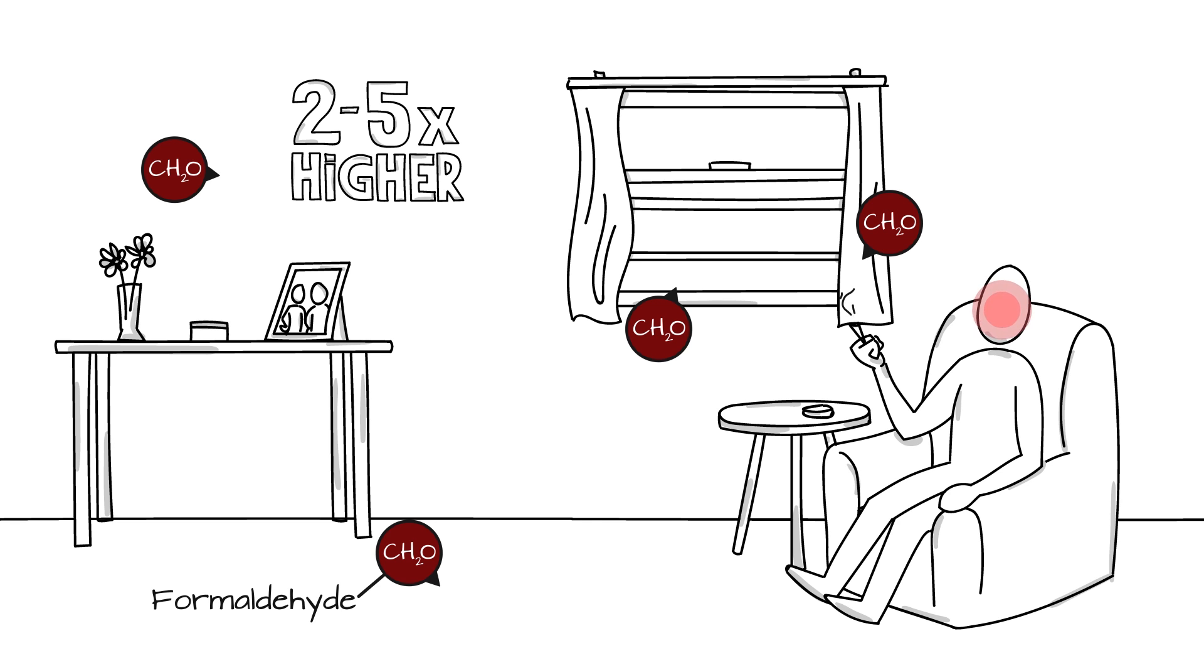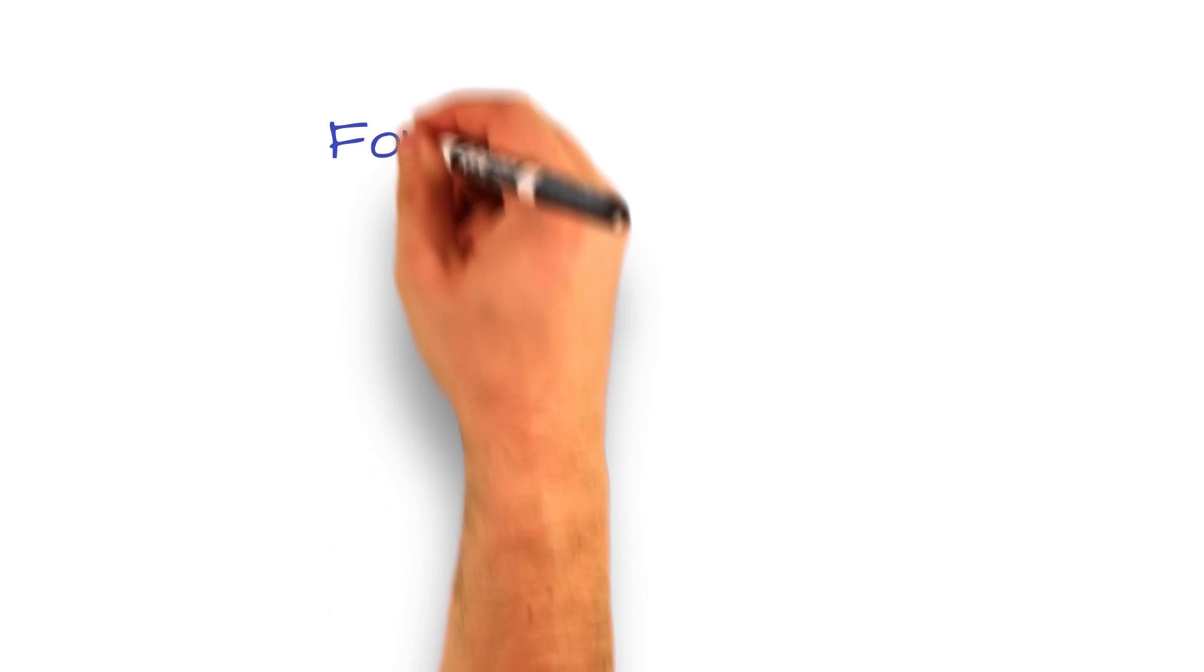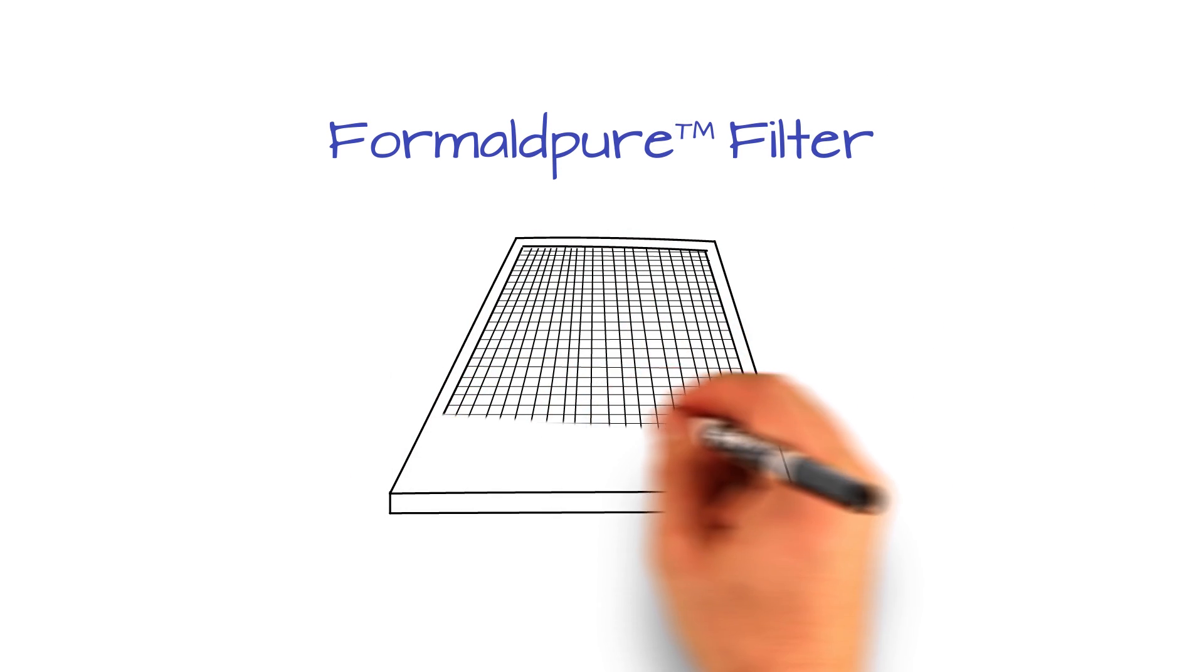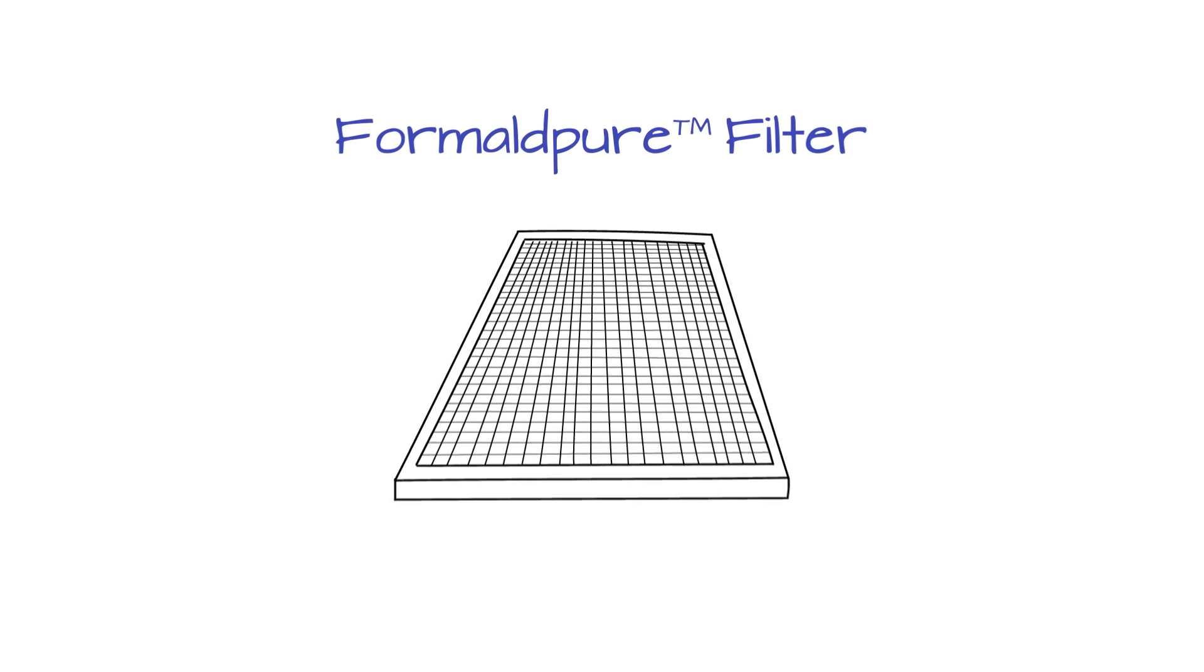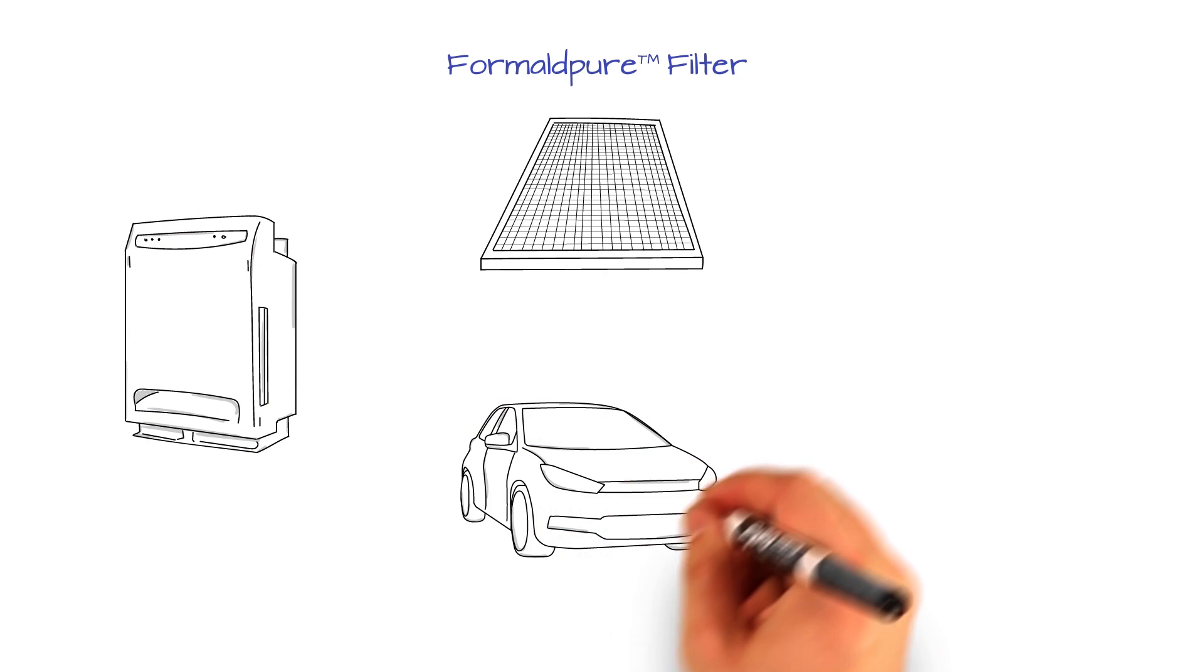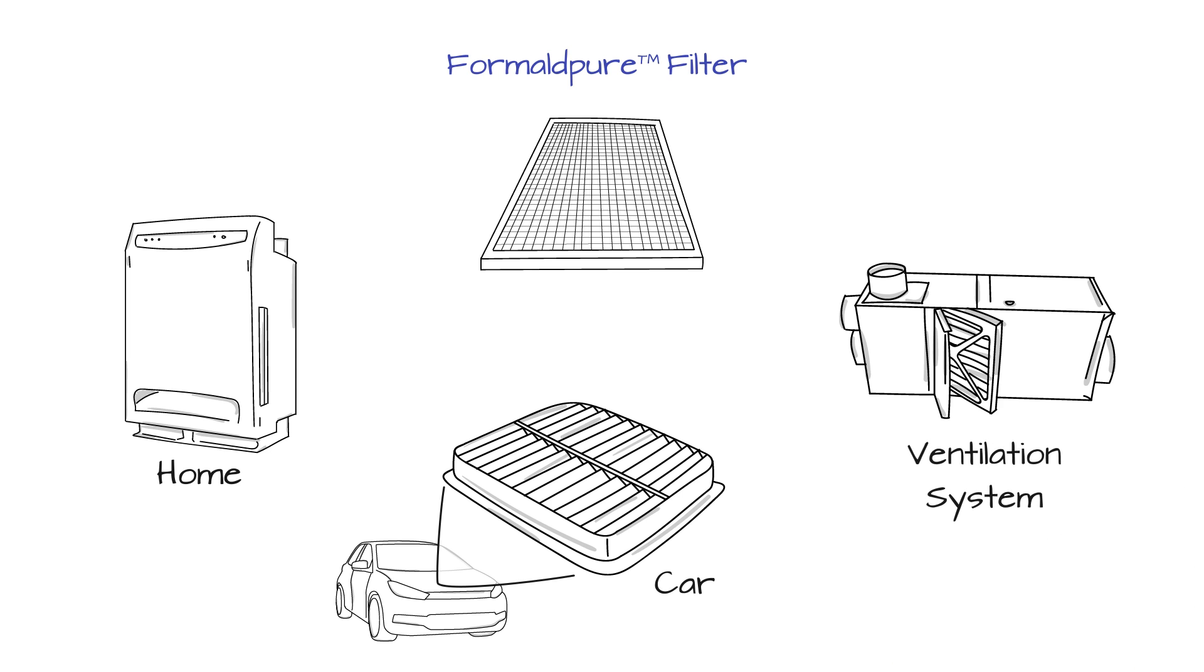BASF developed Formaldpure catalyst technology to remove formaldehyde. A Formaldpure coated filter is inserted into an air cleaner in a home or car, or it can be put in the ventilation system for a building.